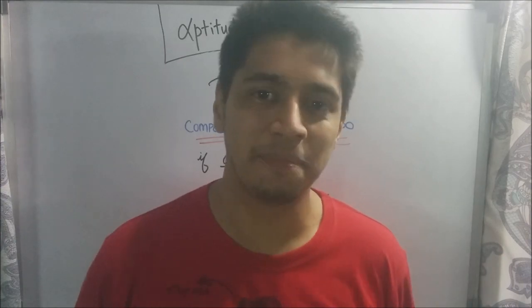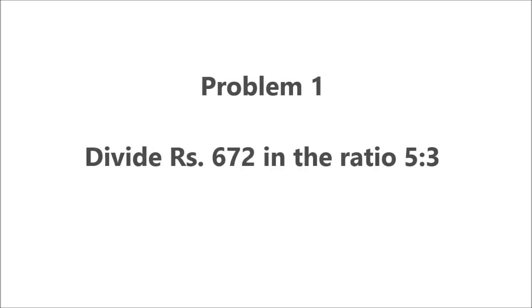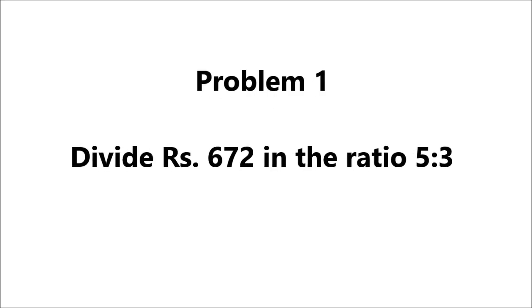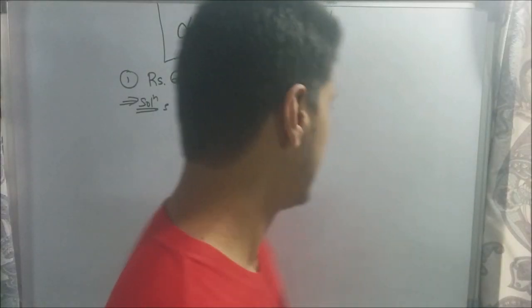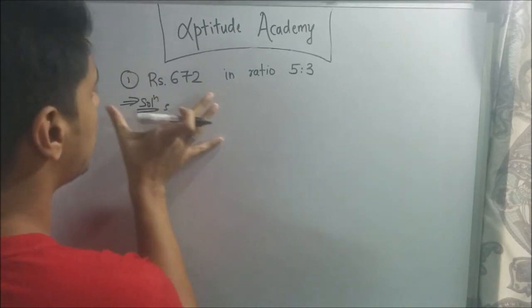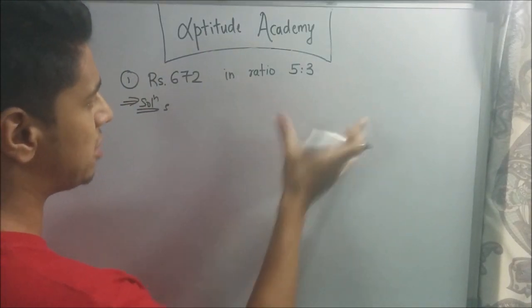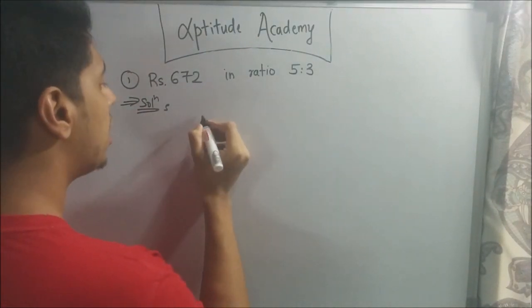Alright, now with that intro, let's solve a simple sum. Problem 1: Divide rupees 672 in the ratio 5 is to 3. This example is supposed to cement your understanding in ratios.